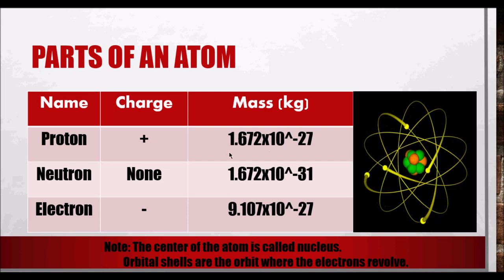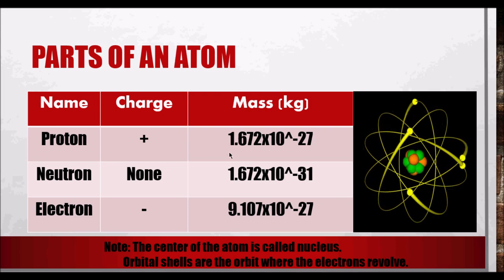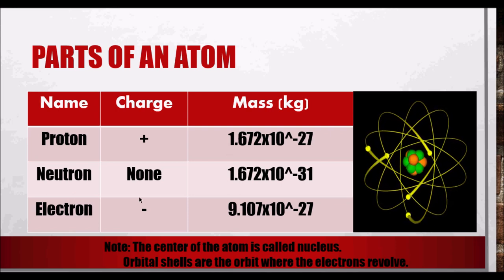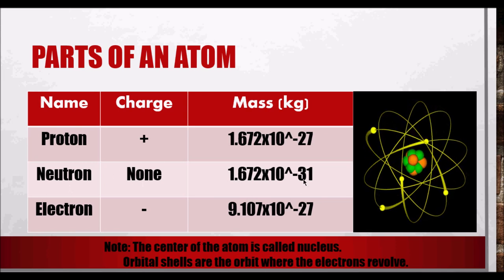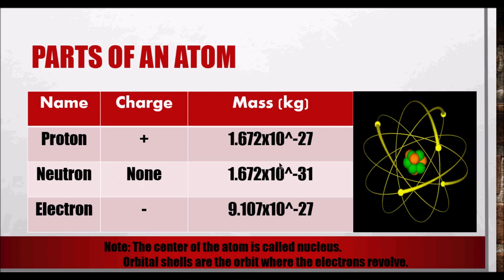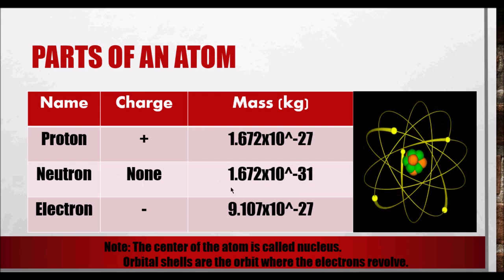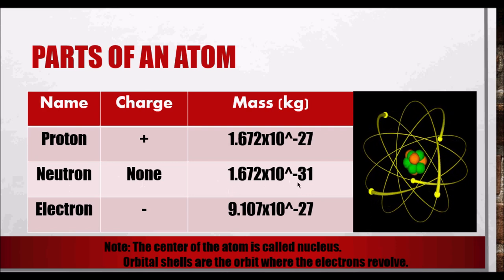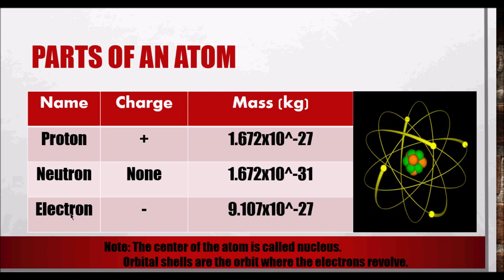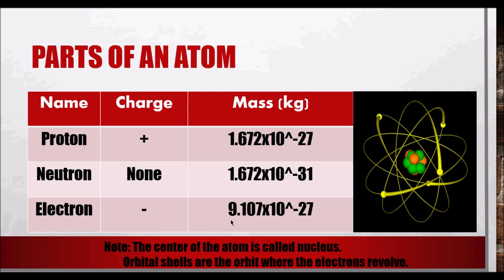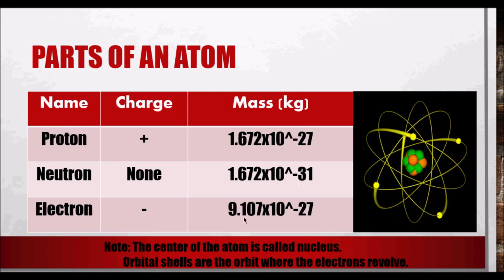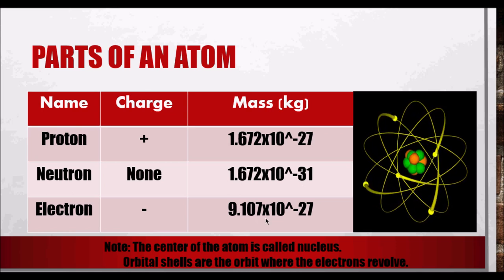The neutron has no charge, it's neutral. It's slightly heavier than the proton at 1.675 times 10 to the negative 27 kg. The electron is negatively charged, and its weight is 9.107 times 10 to the negative 31 kg.